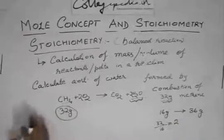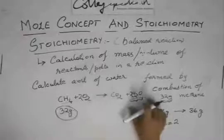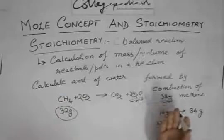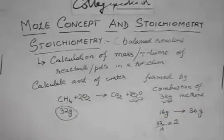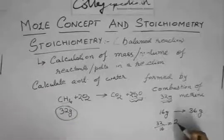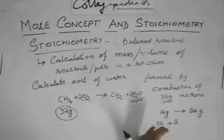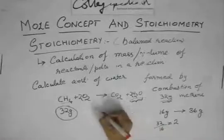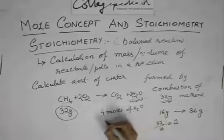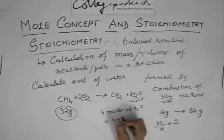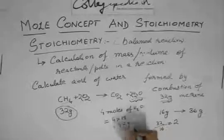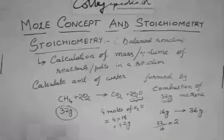So it's 2 moles of methane. From the reaction, we see that 1 mole of methane gives 2 moles of water. So 2 moles of methane will give 4 moles of water. Constant ratio. So these many grams, that is 32 grams which is equal to 2 moles of methane, will give 4 moles of water. And 4 moles of water will be how many grams of water? 4 into 18 which is 72 grams of water. So it's just playing between the moles and the grams.